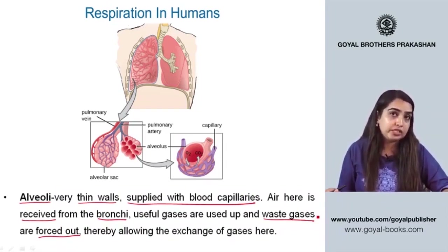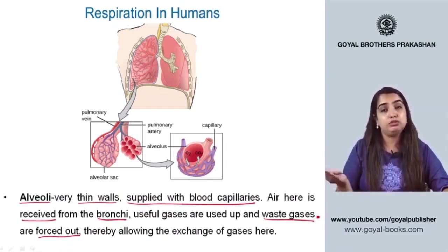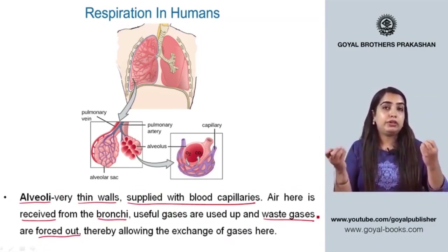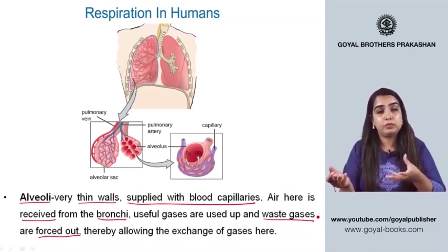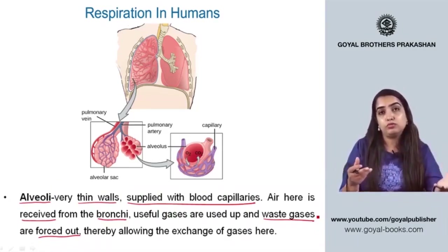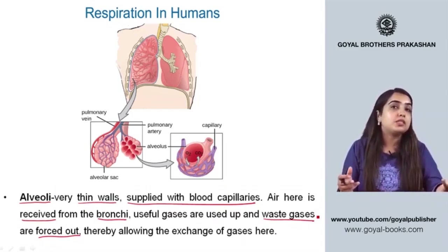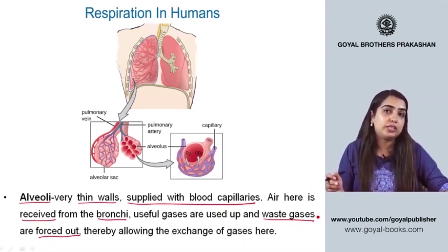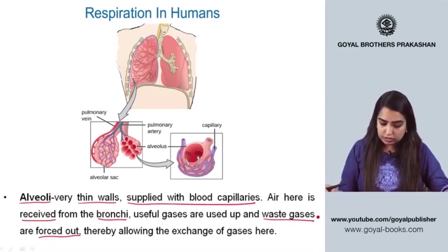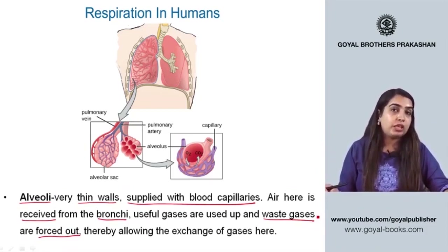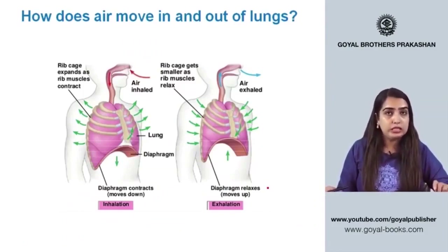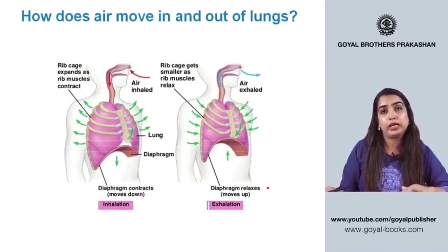The blood carries useful gases through the entire body. Oxygenated blood carries useful substances, while deoxygenated blood brings waste products. In respiration, the waste gases are forced out of the body through exhalation.